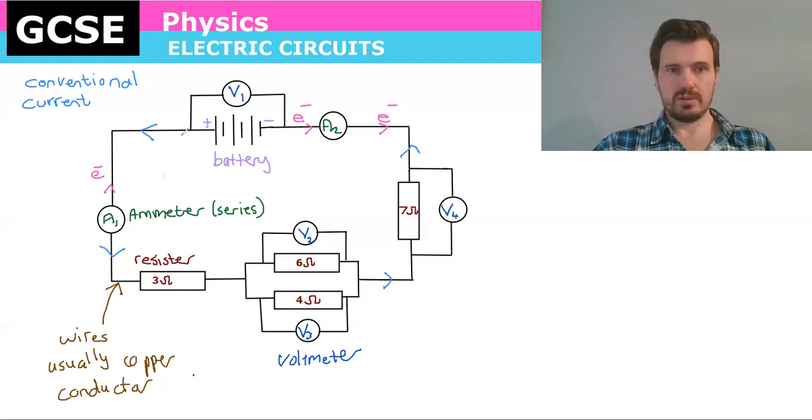And so those are the components. You've got your battery with your cells, your voltmeter connected in parallel, your ammeter connected in series, your resistors, and there's a few other things that they could add to the circuit which you need to know.